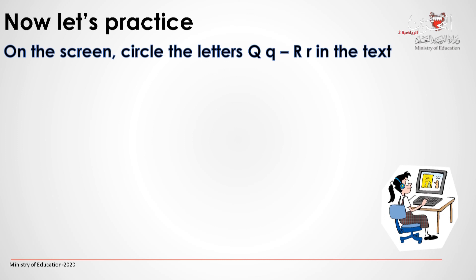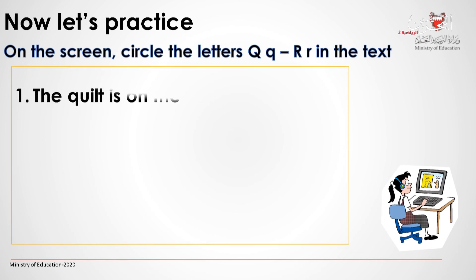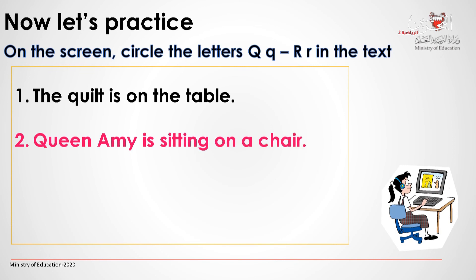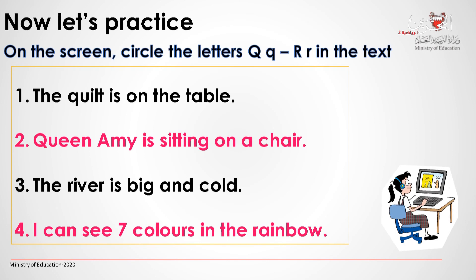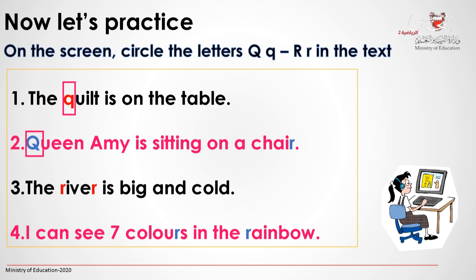On the screen, circle the letters Q and R. The quilt is on the table. Queen Amy is sitting on a chair. The river is big and cold. I can see seven colors in the rainbow. Circle the words with the letters Q and R. Click to check your answers. Did you get it correctly? Very good.